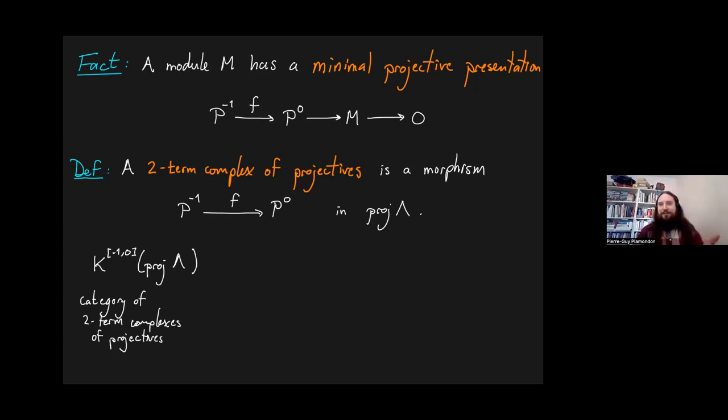Now, this category I see as a full subcategory of a triangulated category, the homotopic category of bounded complexes of projectives over Λ. How do you see this inclusion? Well, you just look at the projective presentation and you can see that it's just a complex of projectives where everybody is zero except two terms. So that's the inclusion.